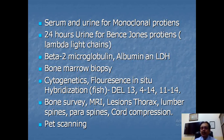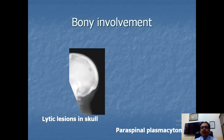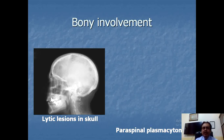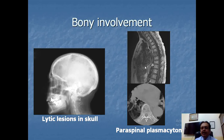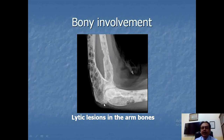In this picture, you can see lytic lesions in the skull. There are also plasmacytomas in the paraspinal area, as seen in both standard and transverse sections. Additionally, the network-like lytic lesions are visible in the ulna and radius of the forearm. The humerus also shows lytic lesions.